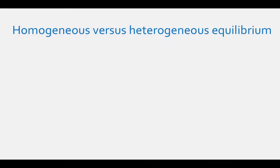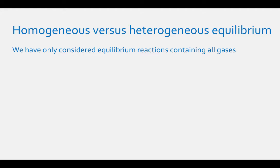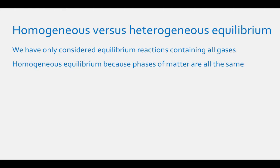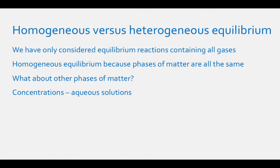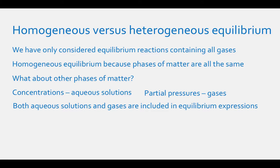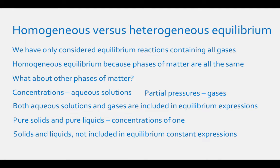Up until this point, we have only considered equilibrium constant expressions of reactions containing gases. These are called homogeneous equilibrium reactions because their phases of matter are all the same. When we say concentration of something, we usually think of aqueous solutions, and when we say partial pressure of something, we think of gases. Both aqueous solutions and gases are included in equilibrium constant expressions because they both have concentrations. Pure solids and pure liquids have constant concentrations of 1, and therefore are not included in equilibrium constant expressions.